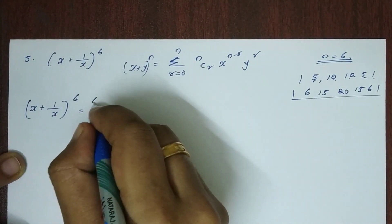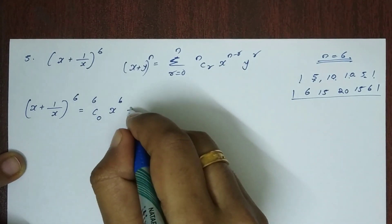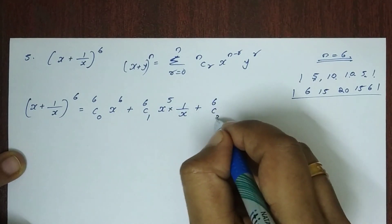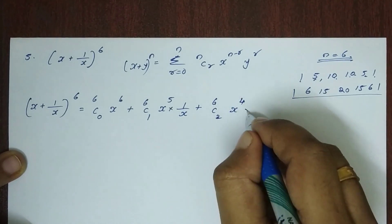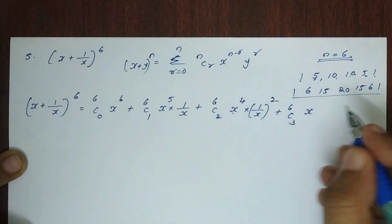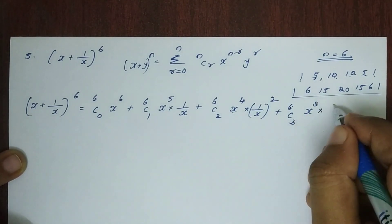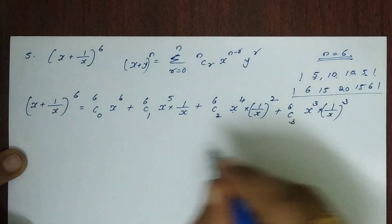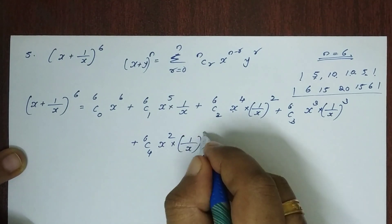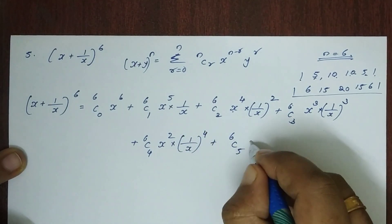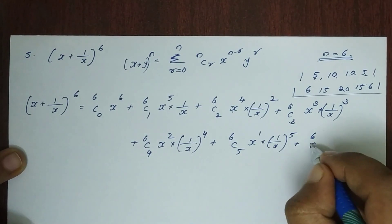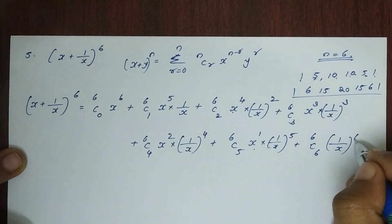(x + 1/x) raised to 6 equals 6C0 times x raised to 6, plus 6C1 times x raised to 5 times (1/x), plus 6C2 times x raised to 4 times (1/x) squared, plus 6C3 times x raised to 3 times (1/x) cubed, plus 6C4 times x squared times (1/x) raised to 4, plus 6C5 times x times (1/x) raised to 5, plus 6C6 times (1/x) raised to 6.